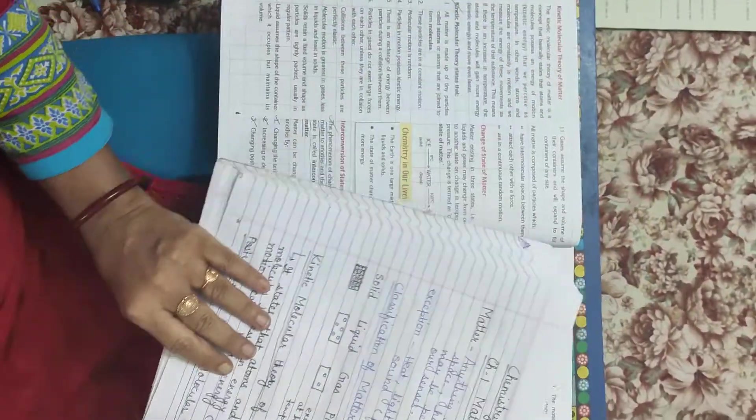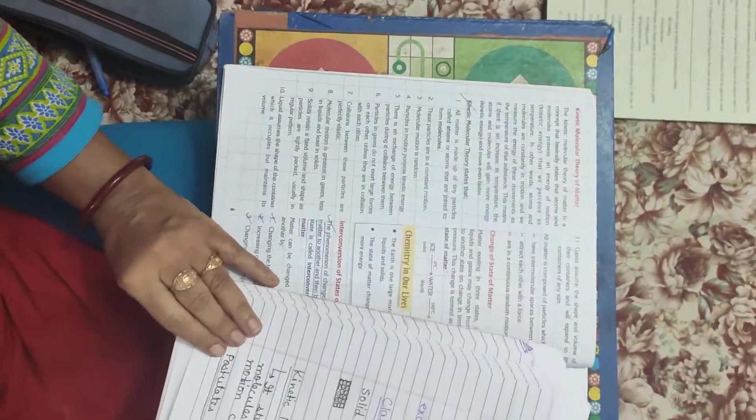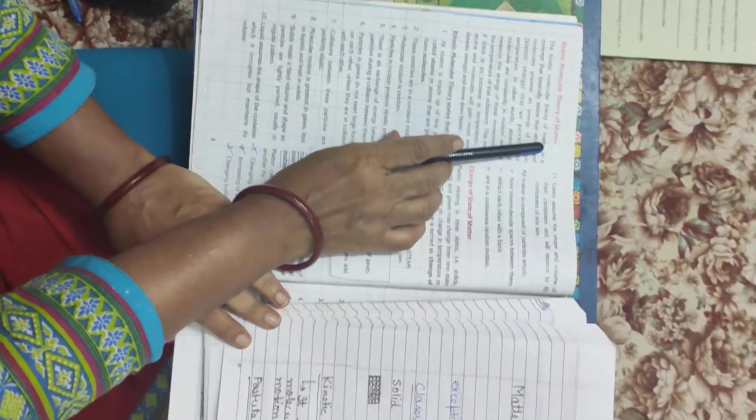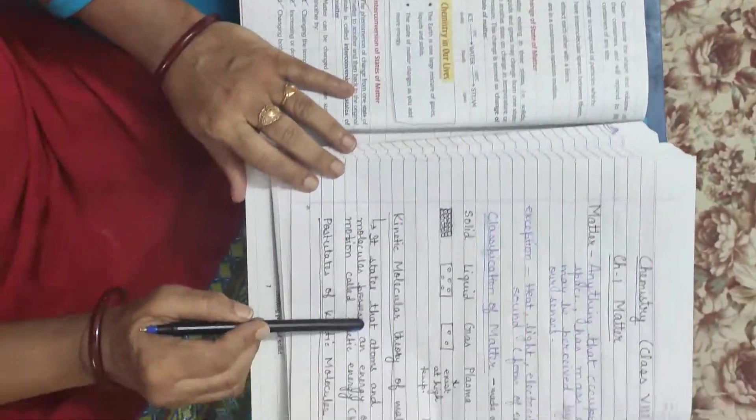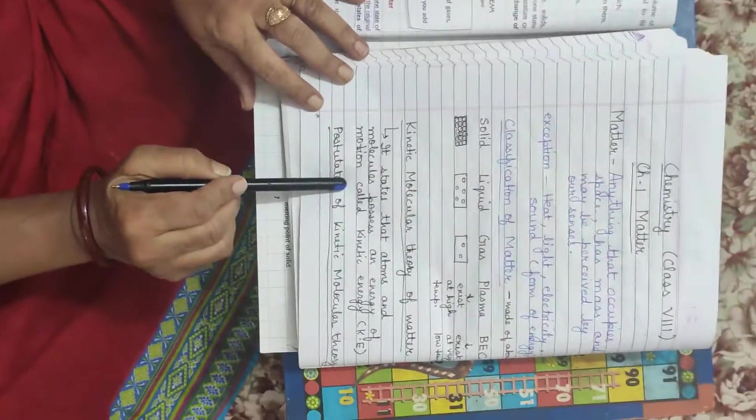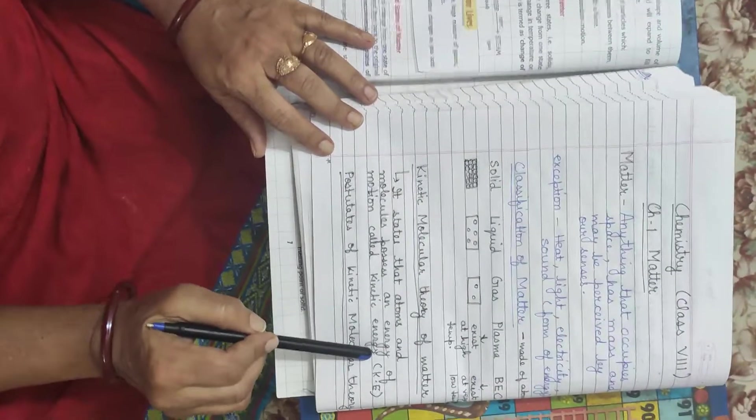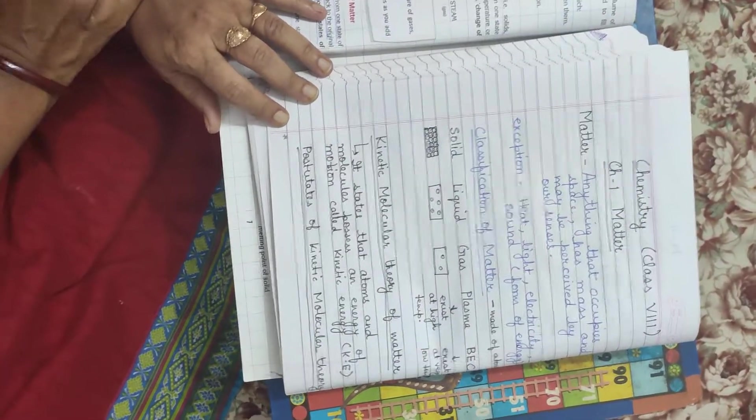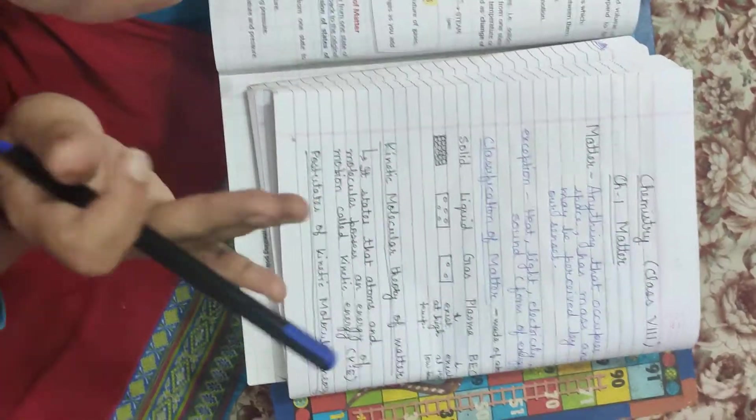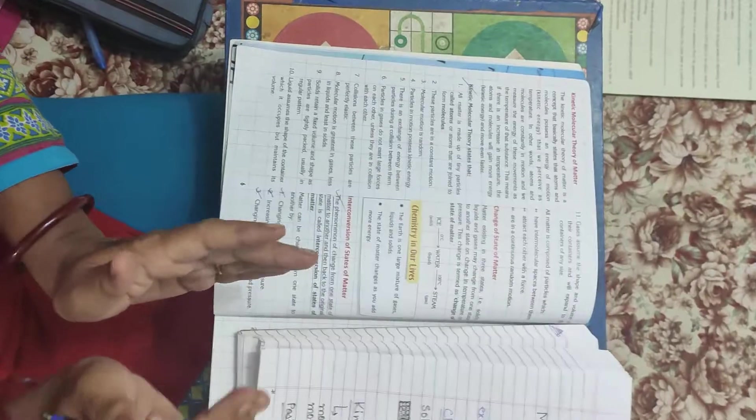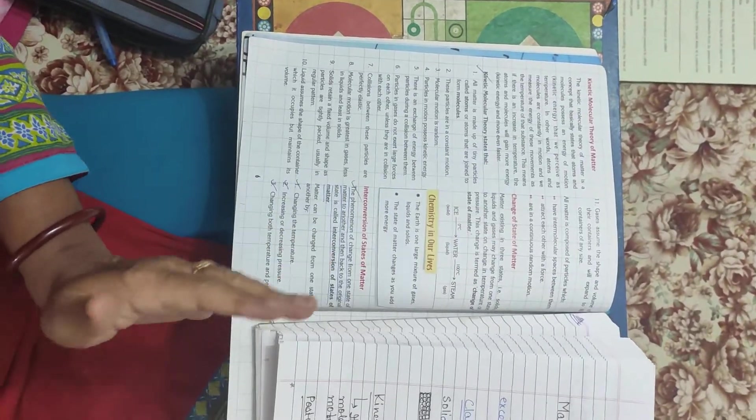Now, let us come to the kinetic molecular theory of matter. It states that atoms and molecules possess energy of motion called kinetic energy. What does it mean? It means that atoms present in the matter, they have energy and they have motion. So, they move.